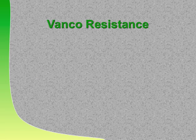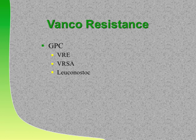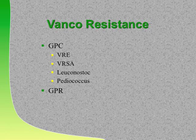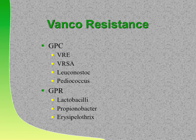Vancomycin-resistant gram-positive cocci include: VRE, VRSA (vancomycin-resistant Staph aureus), Leuconostoc, and Pediococcus. Vancomycin-resistant gram-positive rods—inherently resistant to vancomycin—include Lactobacillus (which can cause endocarditis and bacteremia), Propionobacterium, and Erysipelothrix. If they're penicillin-allergic, don't give them vancomycin for these bugs—it won't work.